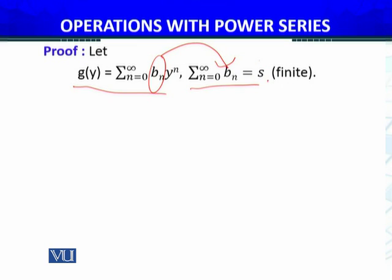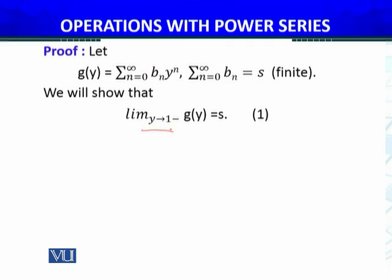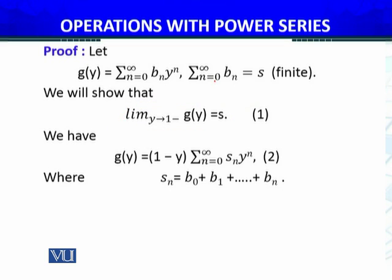The series converges to S, which is a finite number. This is our assumption; at the end I will replace b_n with R^N times a_N, which I will give in the statement. The target is to show that the limit as y approaches 1 from the left side of G(y) equals S. This is my target, and then I will explain which substitution makes this proof valid.